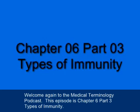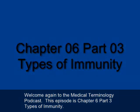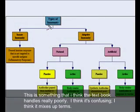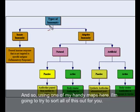Welcome again to the Medical Terminology Podcast. This episode is Chapter 6, Part 3, Types of Immunity. This is something that I think the textbook handles really poorly — I think it is confusing and mixes up terms. So using one of my handy maps here, I'm going to try to sort all this out for you.